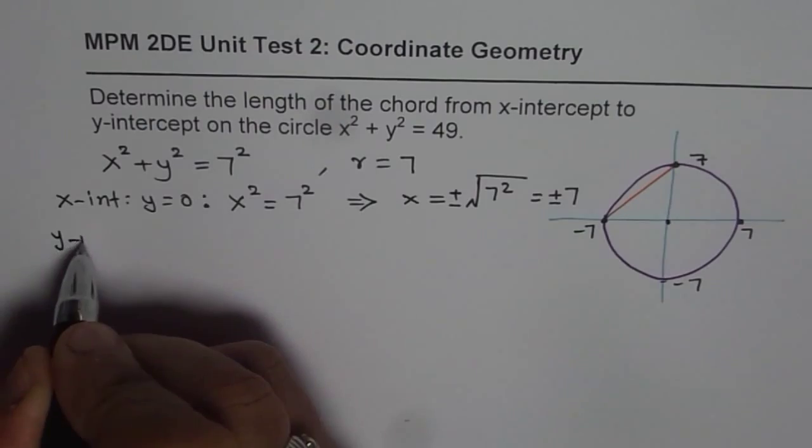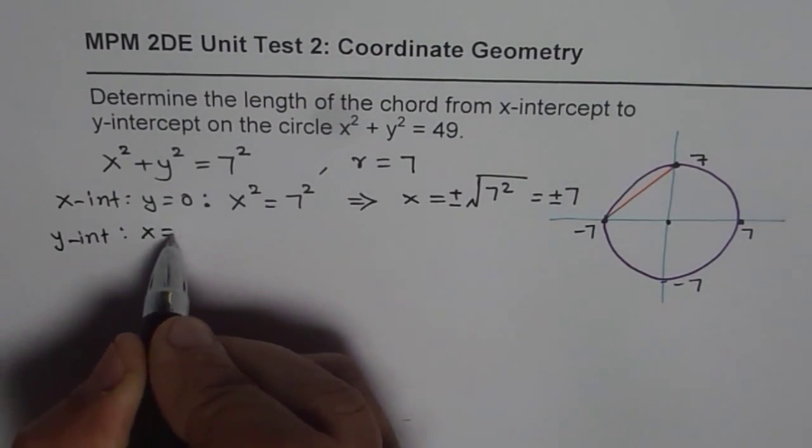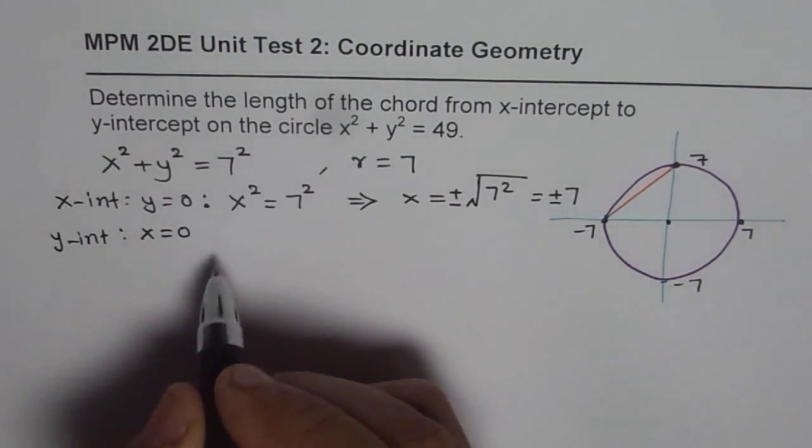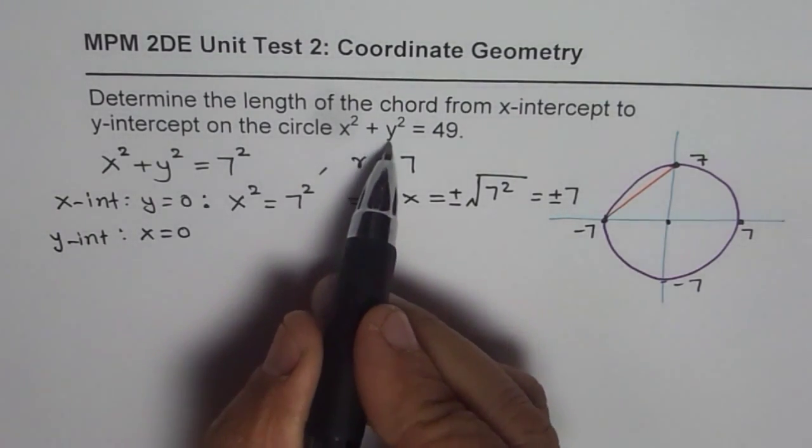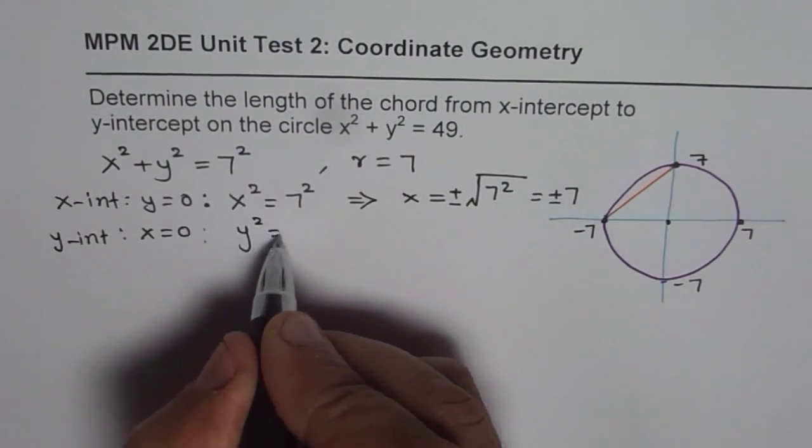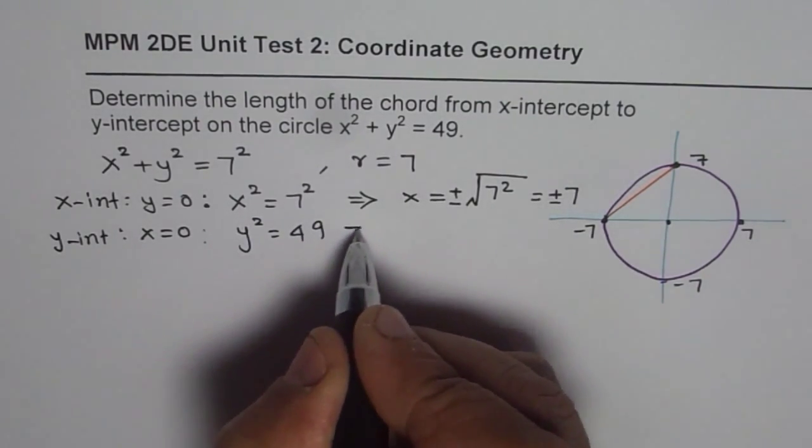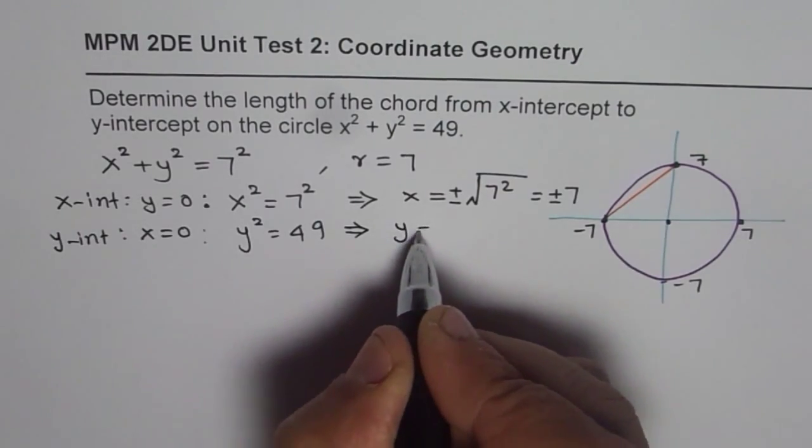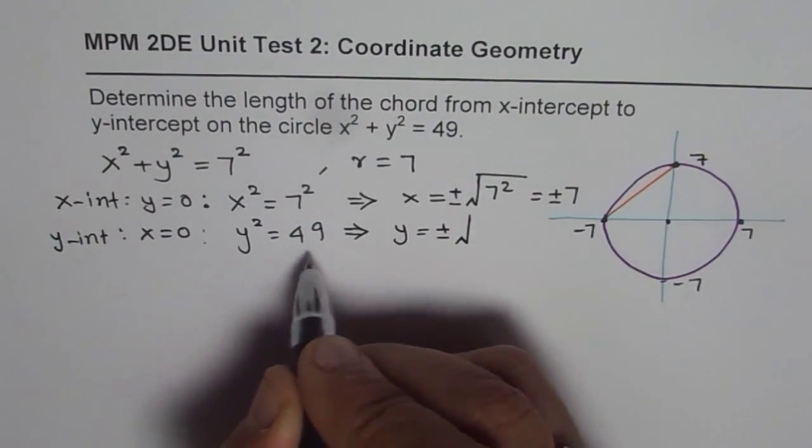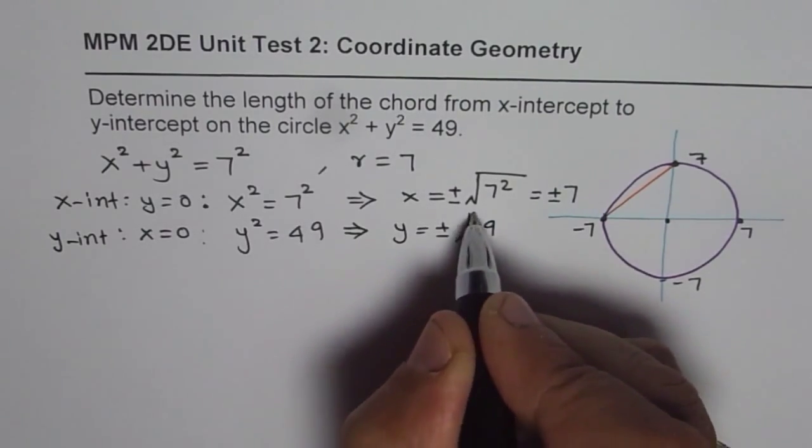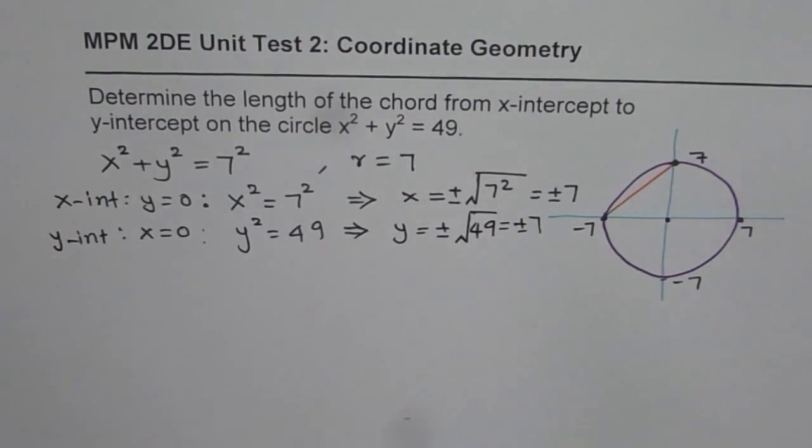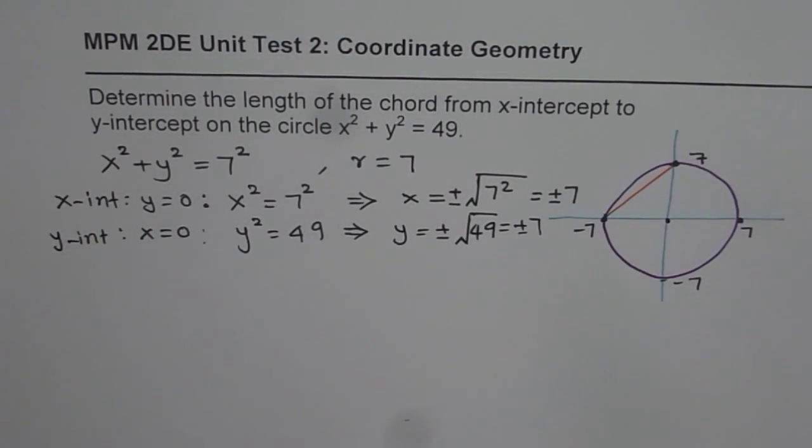Now, to find y-intercept, we have to put x = 0. If I put x = 0, let me use this equation this time. Then I get 0 + y² = 49. So I get y² = 49. And from here I can say y = ±√49 and that is again equals to ±7. So you get these two y-intercepts.